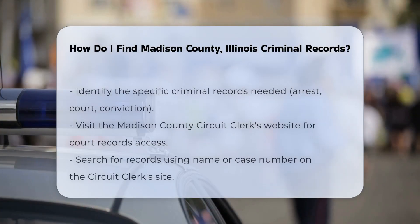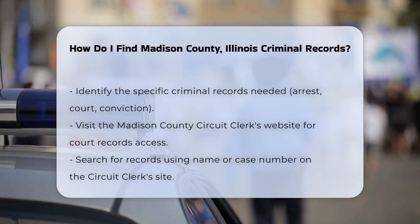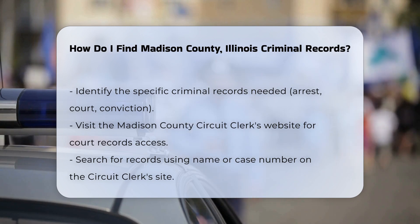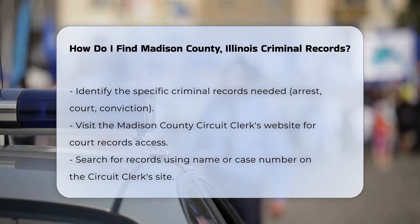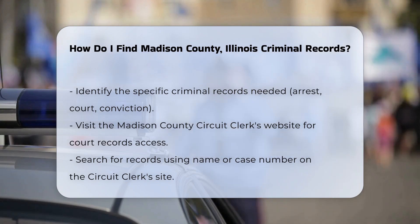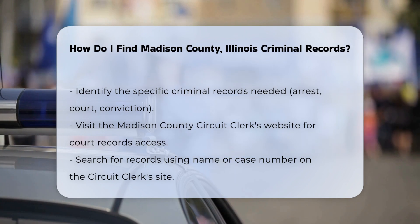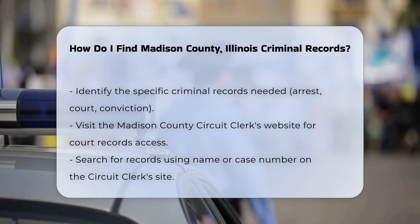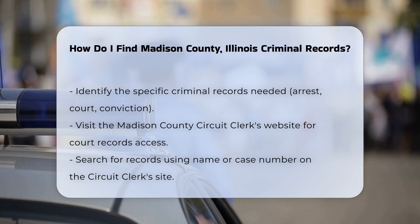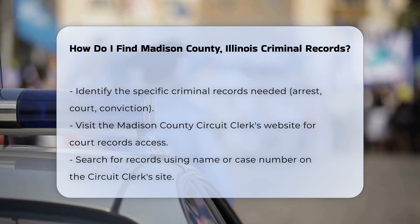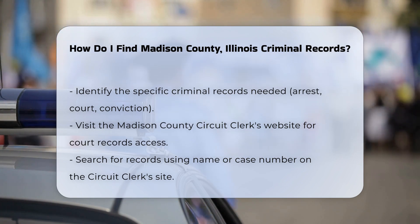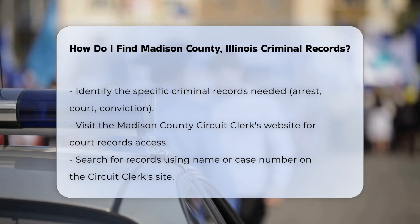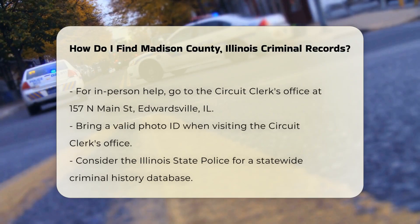To find criminal records in Madison County, Illinois, start by identifying the specific records you need. Criminal records can include arrest records, court records, and conviction records. Visit the Madison County Circuit Clerk's website — they provide access to court records, which can include information about criminal cases. You can search by name or case number.